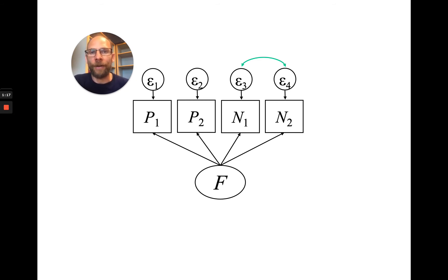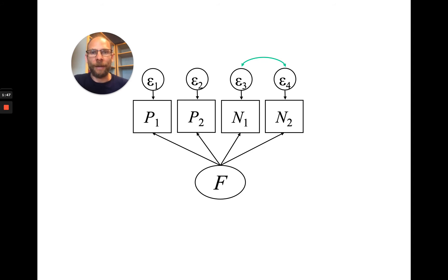Or we might find a large covariance residual for the association between the negative or positive items in our residual output, for example in the program M+. One way to address this issue is to allow for a residual correlation, allowing the error variables to be correlated. However, as I explained in a previous video, this has certain disadvantages, and so I'm going to show you a way that I think is more appropriate for handling such effects.